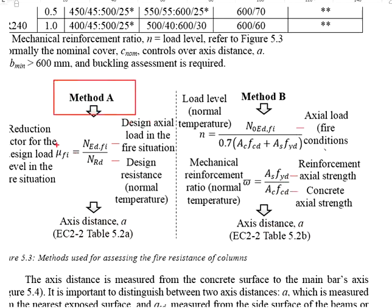Method A, use the μfi. Whereas, method B, use the n as well as the ω.